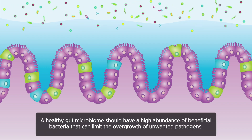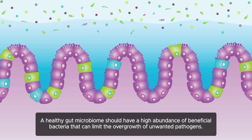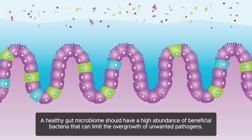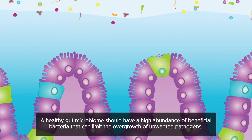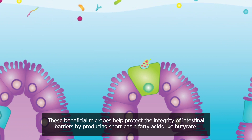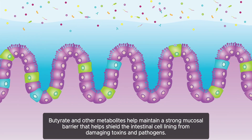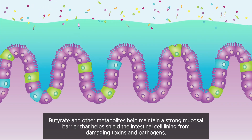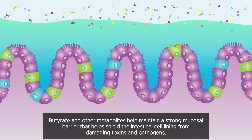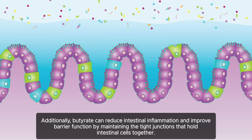A healthy gut microbiome should have a high abundance of beneficial bacteria that can limit the overgrowth of unwanted pathogens. These beneficial microbes help protect the integrity of the intestinal barrier by producing short-chain fatty acids like butyrate. Butyrate and other metabolites help maintain a strong mucosal barrier that helps shield the intestinal cell lines from damaging toxins and pathogens.